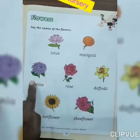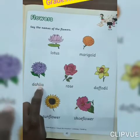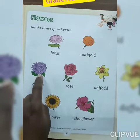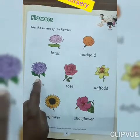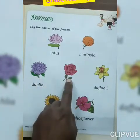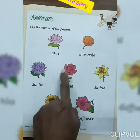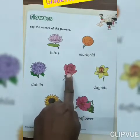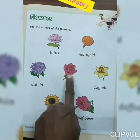Now look at here everyone. Which flower is this? Dahlia. And which color of dahlia? Purple. Now look at here everyone. Which flower is this? Rose. And which color of rose? Red, pink, white, orange — so many colors of rose.